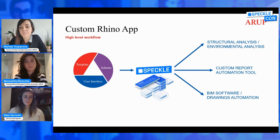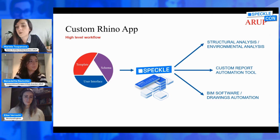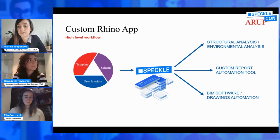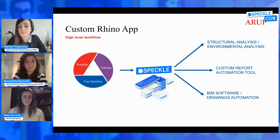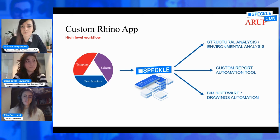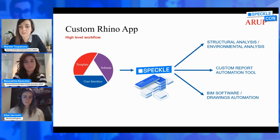This is the high-level workflow describing how we currently use this framework. We start with the DIY BIM framework, which imports data and geometry into Speckle. From there, the data can be used for many different applications — structural analysis, environmental analysis, interoperability with BIM software, drawing automation, and automating reports that go directly to clients. With that, I will now pass the word to Benedetta, who will present two very interesting use cases using this framework.